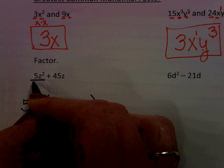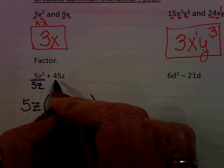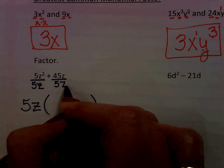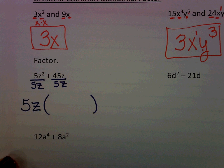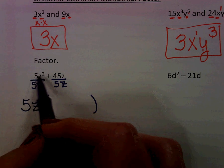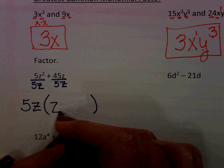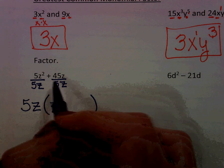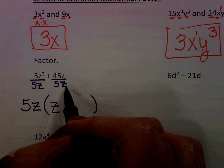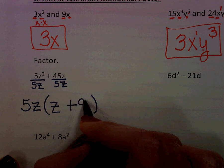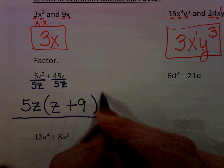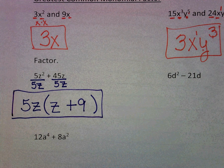What we're going to do is divide out that greatest common factor. This is where our exponent rules become important. 5z squared divided by 5z would simply be z. 45z divided by 5z would simply be 9. And so here are my factors of that binomial.